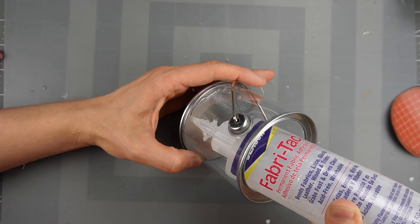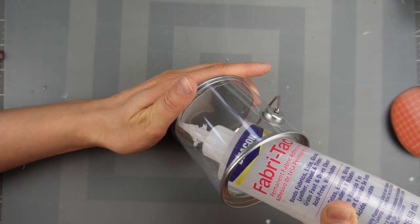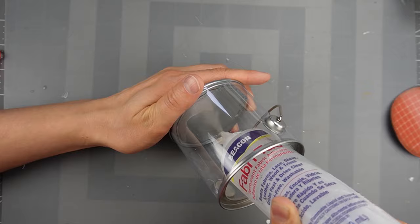The instructions suggest using E6000 glue for attaching the cardstock floor, but I'm using Fabri-Tac. To prevent the floor from squeezing the glue out to the sides, I left about a quarter inch of a gap around the edges.